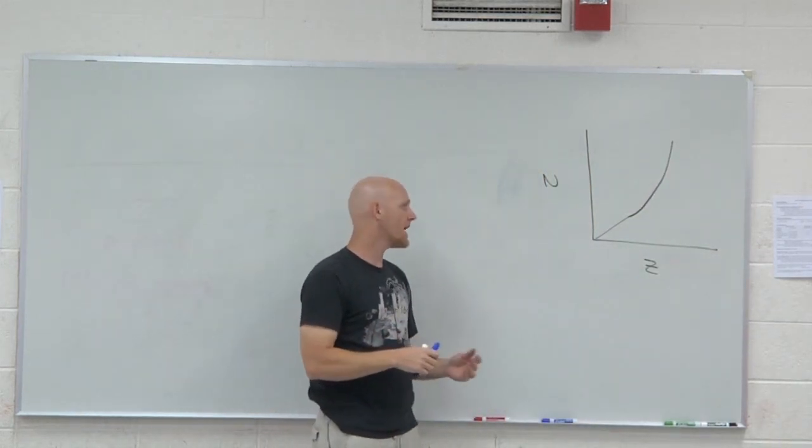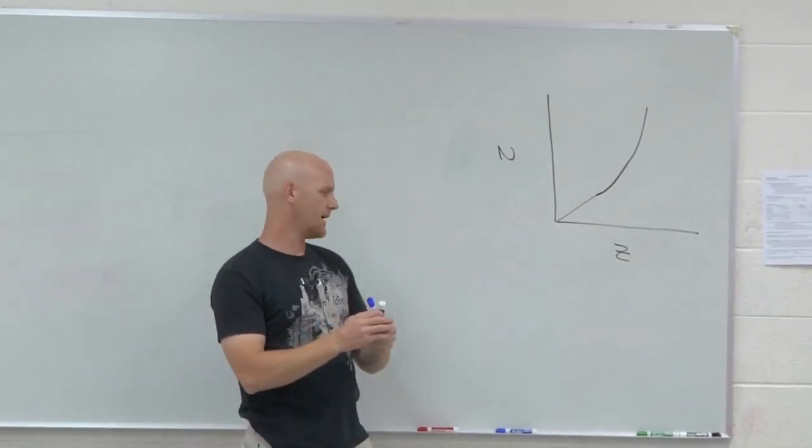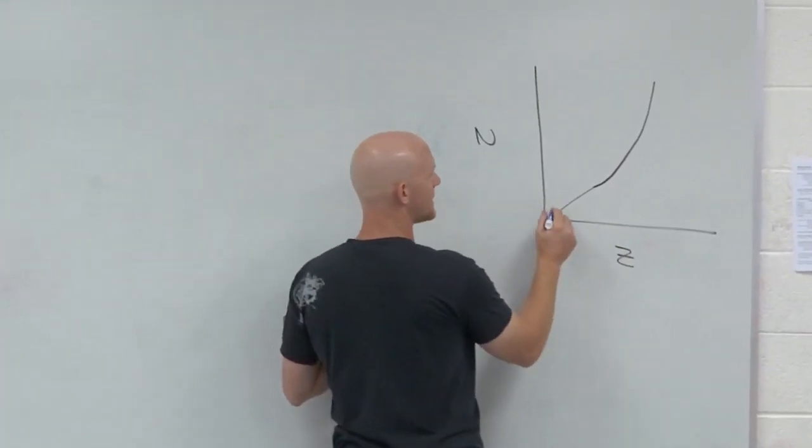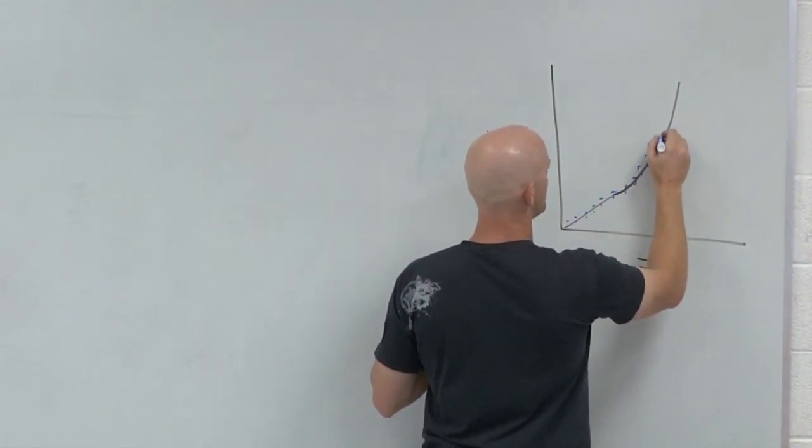Alright, if you look at a graph of N versus Z for all the stable nuclei, what you'll find out is that all the stable nuclei that exist fall in a very narrow region on this graph.